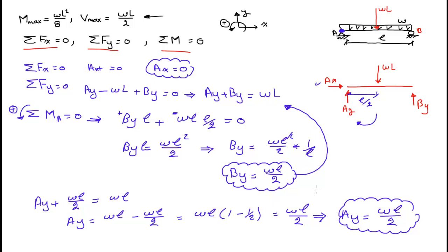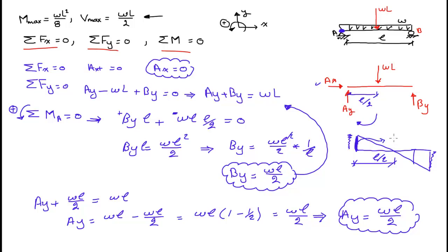The shear diagram for this uniform distribution starts at a maximum positive value at the left support, crosses zero at L/2, and reaches a maximum negative value at the right support. The maximum shear at the support equals the reaction at the support, which is WL/2 on both sides.